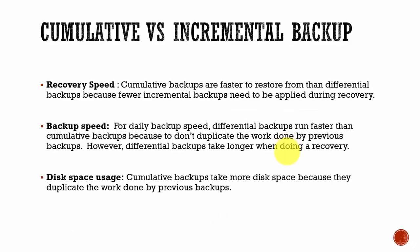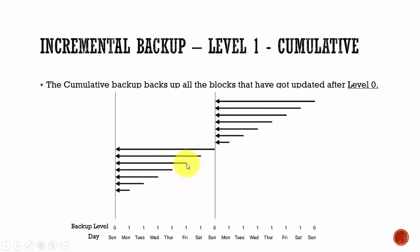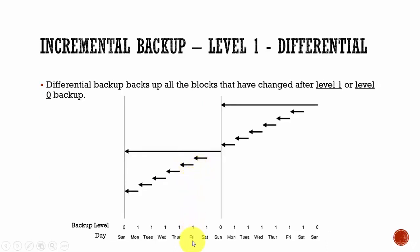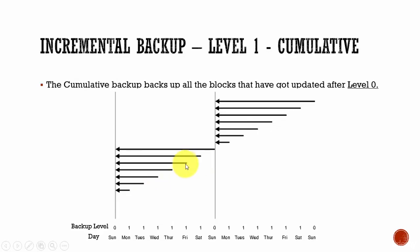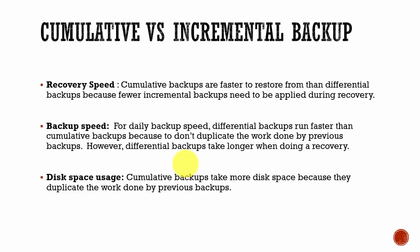What are the advantages of going for cumulative or differential incremental backup? Let's check the recovery speed on both. Cumulative backups are much faster to restore than the differential, because we need to apply only a few incremental backups to perform the recovery. For example, if you have to recover the database on a Friday, applying just the cumulative backup taken on Friday morning is sufficient. Whereas in a differential, you would need backups from Friday, Thursday, Wednesday, Tuesday, and Monday — five differential backups total. With cumulative, just the one taken on Friday morning is enough.